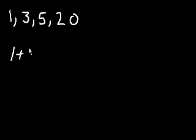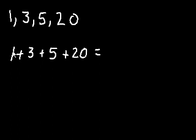So we say 1 plus 3 plus 5 plus 20 equals, let's see, 1 plus 3 is 4, 4 plus 5 is 9, 9 plus 20 is 29.